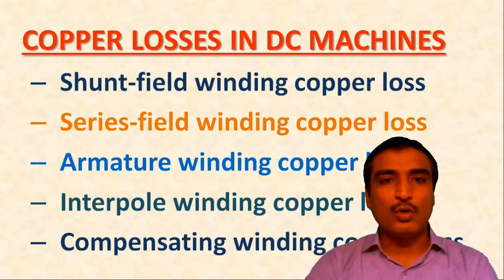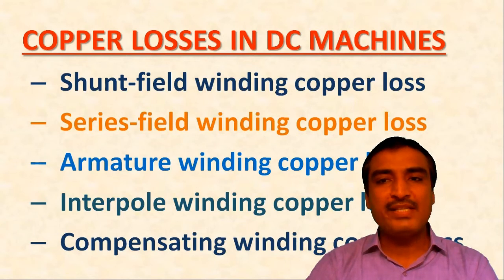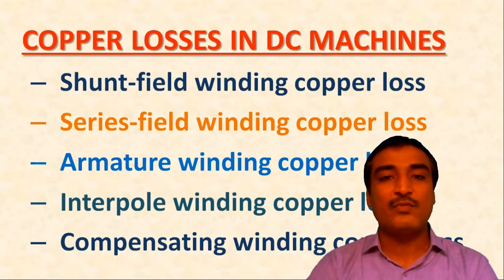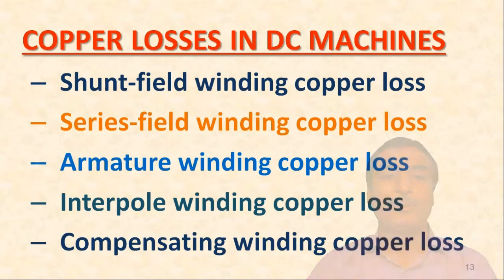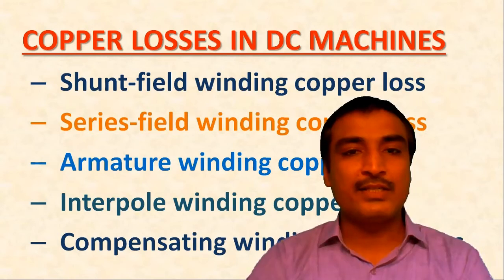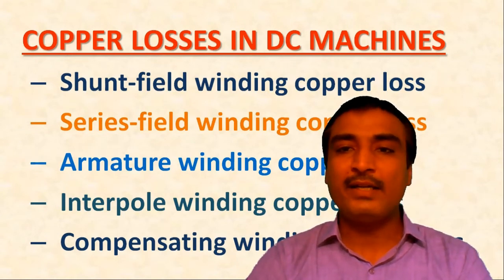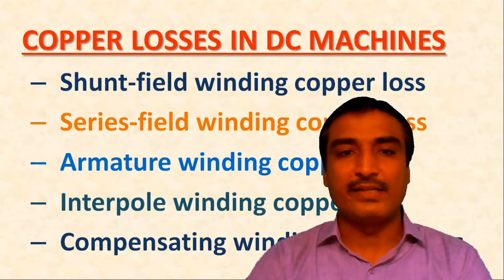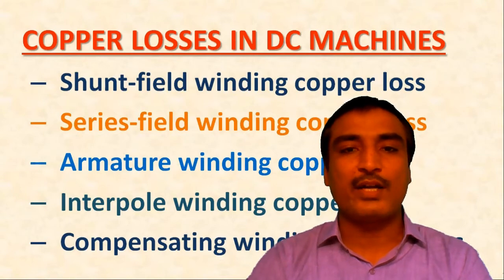Furthermore, it is worth noting that the series field, interpole, and compensating windings are connected in series with the armature of the DC machine and thus they carry full armature current. For this reason, the copper losses in the series field, interpole, and compensating windings are proportional to the square of the armature current.